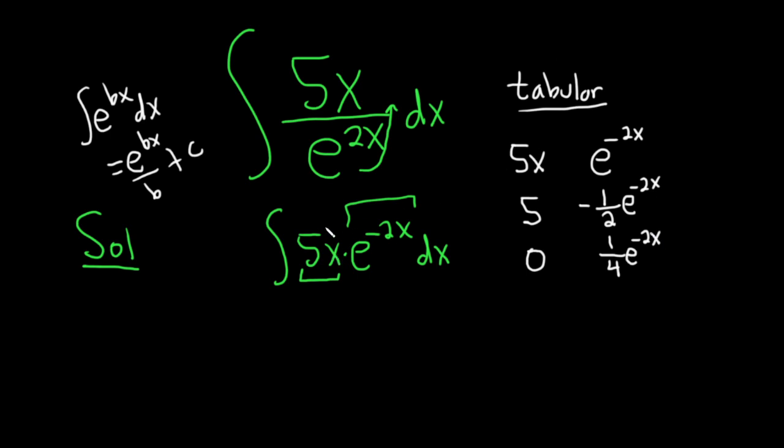So again, you pick the factor that after repeated differentiation is eventually 0, and then the other factor, you just keep integrating it. Then you start by writing a plus sign, and you alternate. So plus, minus, plus. Then you draw arrows, and you multiply, and you're done.